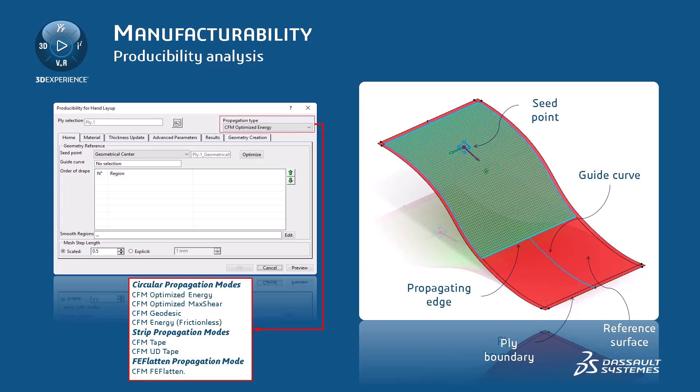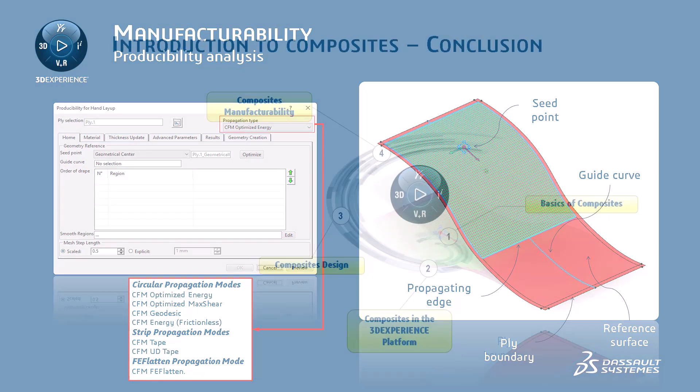After performing producibility analysis, you can perform a finite element simulation using Simulia 3DEXPERIENCE applications, like Mechanical Scenario Creation and Physics Results Explorer. In the case of a composite part, the following parameters are important to study: the stress, the Hashin Criteria Failure, the Strain, the Tsai-Hill and Tsai-Wu Stress-Based Failure Criteria, and the thickness of the part.